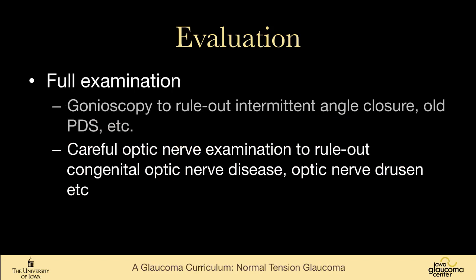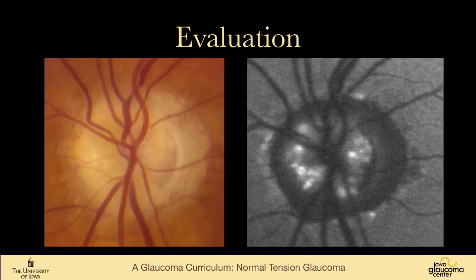It's important to look carefully at the optic nerve to rule out congenital optic nerve diseases, optic nerve head drusen, et cetera. This is a patient who has drusen — not that easy to see on slit lamp examination of the optic nerve, but they autofluoresce as one can see on the right.